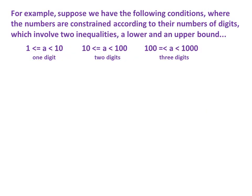For example, suppose we have the following conditions, where the numbers are constrained according to their numbers of digits, which involve two inequalities, a lower and an upper bound. So 1 is less than or equal to a is less than 10, means a is a one-digit number. Or 10 is less than or equal to a is less than 100, which means a has two digits. And 100 is less than or equal to a is less than 1000, which means a has three digits.